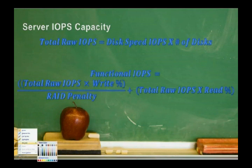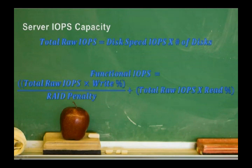We try to figure out how many IOPS we have in the environment. Since this is about a school, let's do some math. To get the total raw IOPS, we have to figure out the disk speed IOPS. We have 15,000 RPM drives, which gives us 150 IOPS per spindle times the number of disks we have, which is eight. That gives us a total raw IOPS of 1,200.